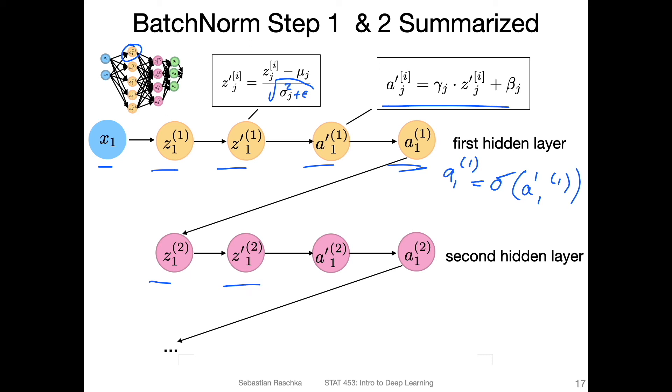And then once we have that, we go to the next input. So this is the next net input. Then again we do step one, and then we do step two, and then we compute again the activation. So this is essentially it. This is how batch norm works.